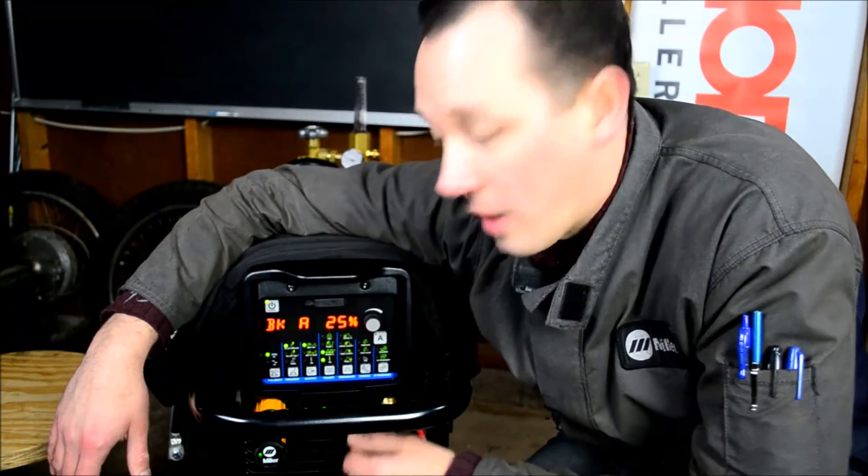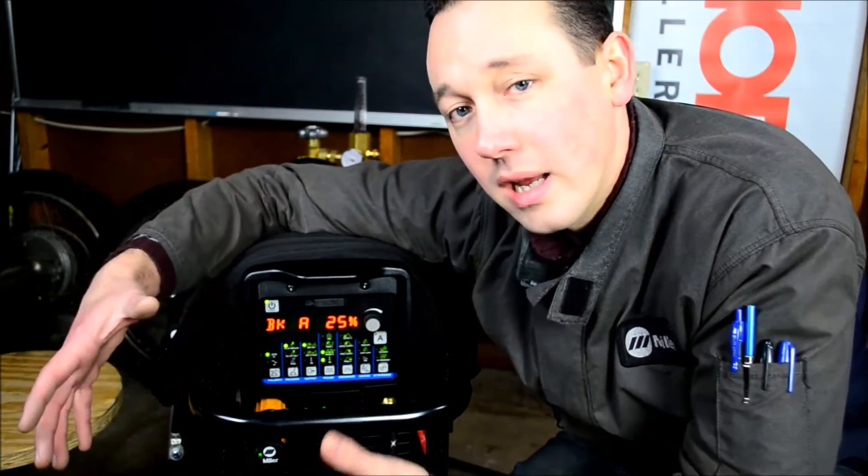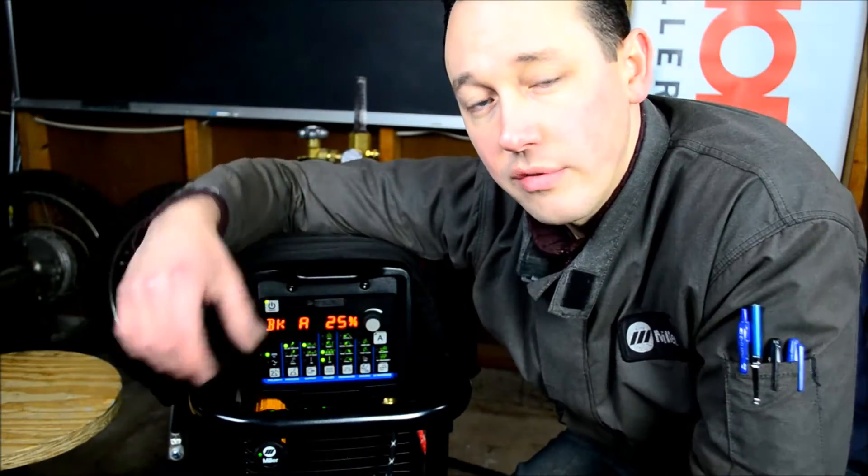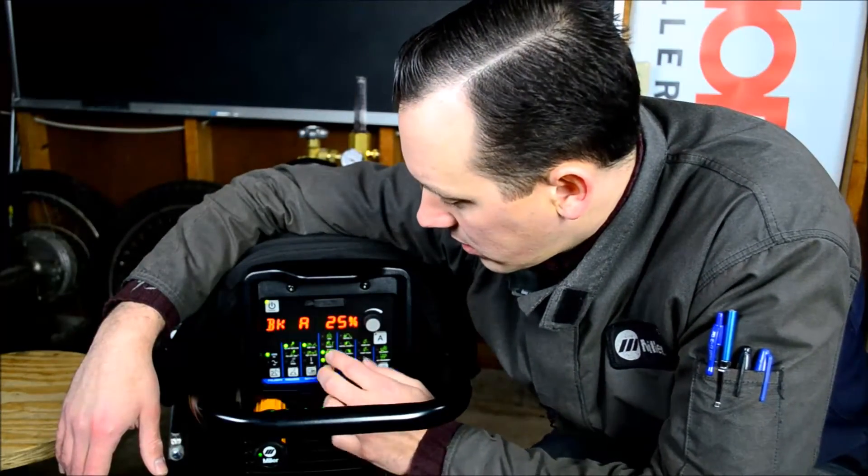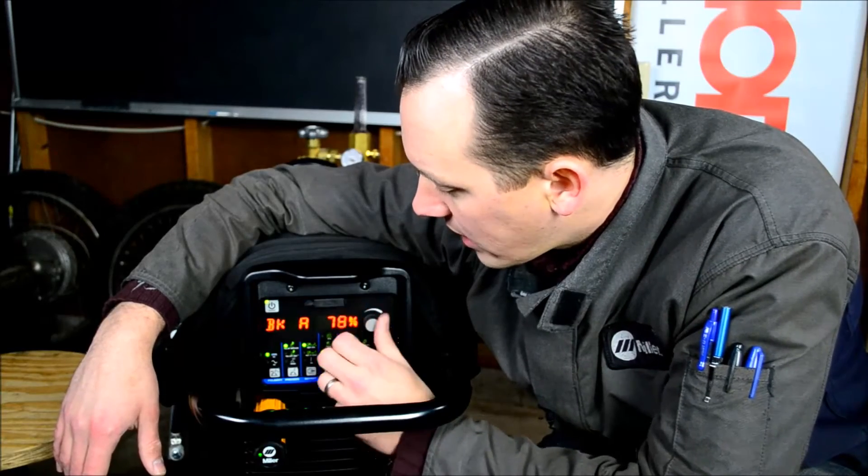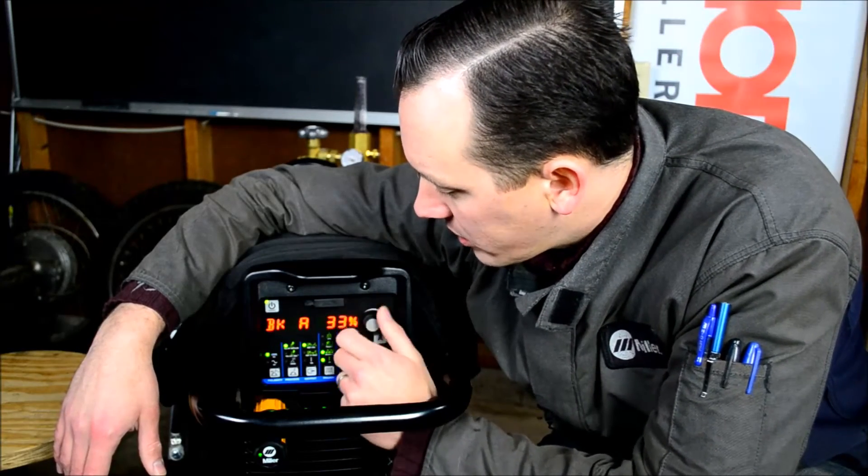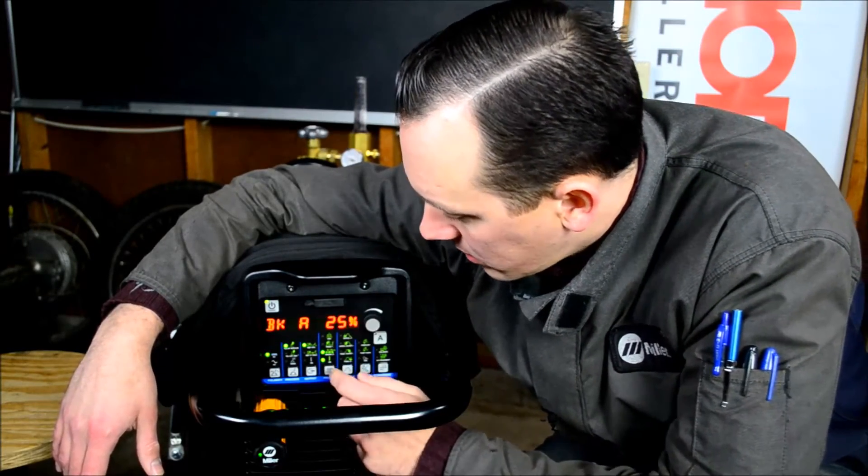Next and finally is going to be our background amperage. So when we're not at the peak amperage, this is a percentage of that that's the background. And this is set at 25. Again, we can go 5 to 95. But 25% is a good place to start.